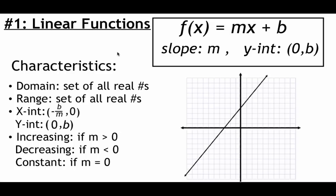Some characteristics of a linear function: the m in the equation is our slope, and the b value on the end gives us our y-intercept. The domain is the set of all real numbers — we don't have division by zero or square roots of negatives to worry about, so we can safely plug in any x value. When we plug in those x values we get back any real number, so the range is also all real numbers. The x-intercept is the opposite of b over m. The line is increasing if the slope is positive, decreasing if the slope is negative, and constant if the slope is zero.